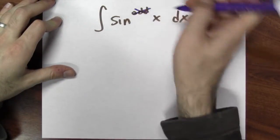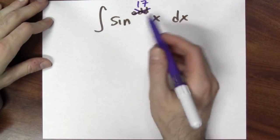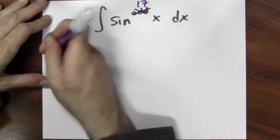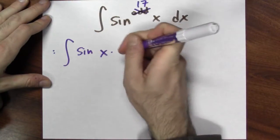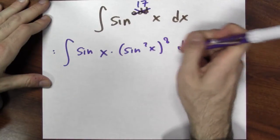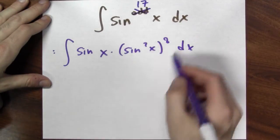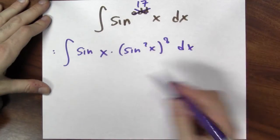Let's make this really concrete. Instead of talking about an odd power, let's just make it 17. Can I anti-differentiate sine to the 17th power? Yeah, I can rewrite this problem as sine of x times sine squared x to the eighth power, because sine squared to the eighth power gives me 16 copies of sine times another sine gives me 17 copies of sine.